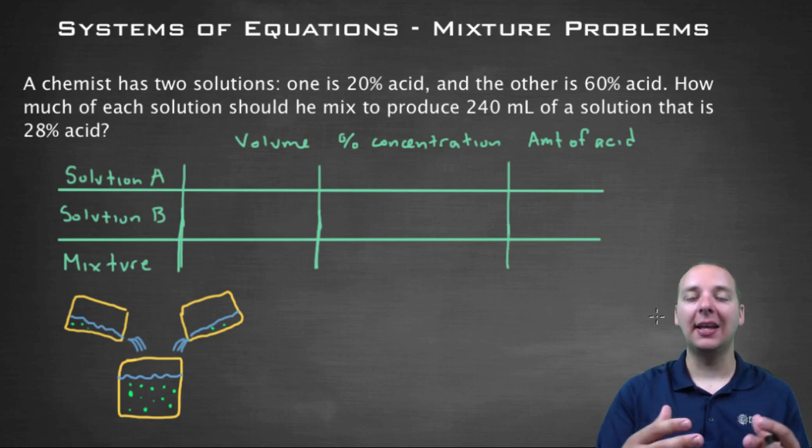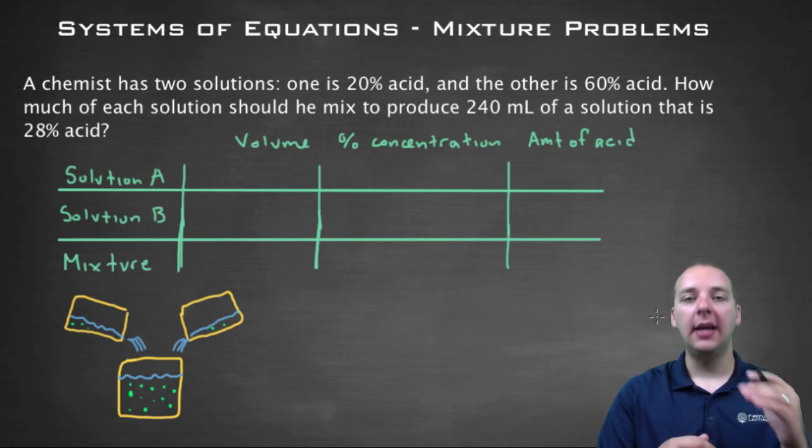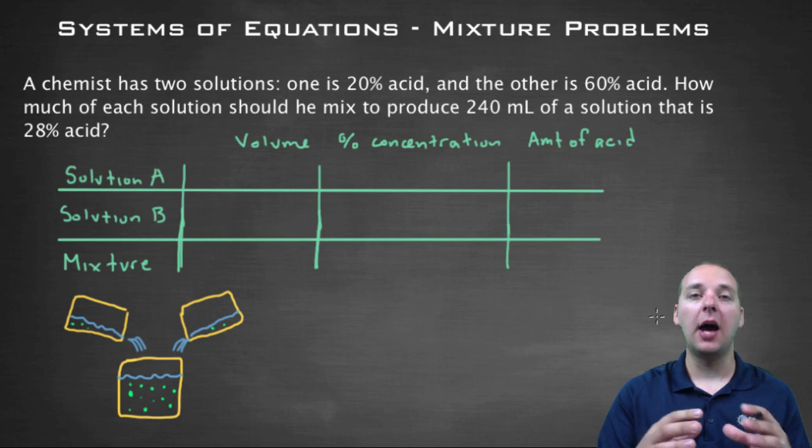The best hint I can give you on how to start these problems is to make a table where each row corresponds to every solution that you'll be dealing with: Solution A, Solution B, and a row for the final mixture as well. It makes everything a lot more clear when you're working with a table like this.